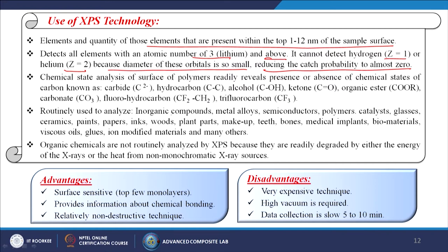XPS is routinely used to analyze inorganic compounds, metal alloys, semiconductors, polymers, catalysts, glasses, ceramics, paints, papers, inks, woods, plant parts, makeup, teeth, bones, medical implants, biomaterials, viscous oils, glues, and iron modified materials, among others. However, organic chemicals are not routinely analyzed by XPS because they are readily degraded by either the energy of the X-rays or the heat from non-monochromatic X-ray sources.